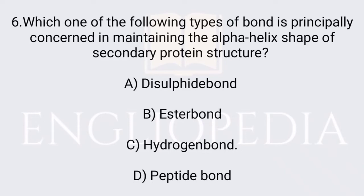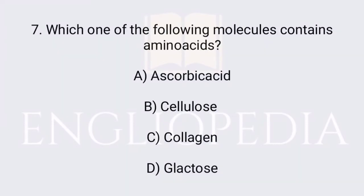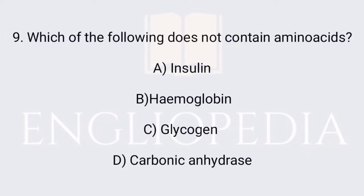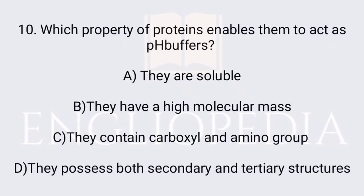Which one of the following types of bond is principally concerned in maintaining the alpha helix shape of secondary protein structure? The hydrogen bond is principally concerned in maintaining the alpha helix shape. Which one of the following molecules contains amino acids? Collagen contains amino acids. Which of the following is a complex of globular protein with non-proteinous material? Hemoglobin is a complex of globular protein with non-proteinous material. Glycogen does not contain amino acids.